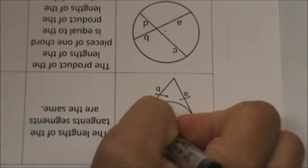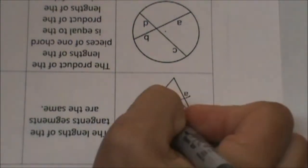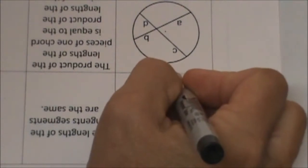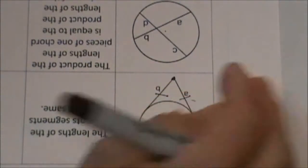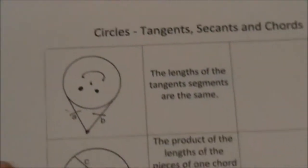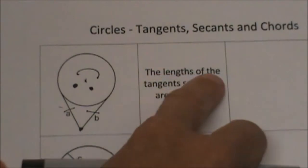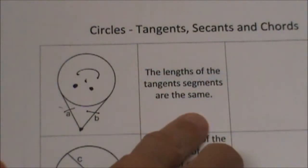From the last unit we looked at we learned the party hat rule that said that if you have an exterior point and then two tangents drawn those two segments are congruent. So flipping back around the rule says the lengths of the tangent segments are the same.